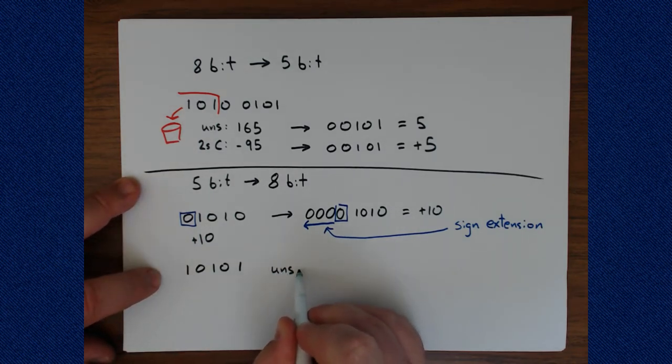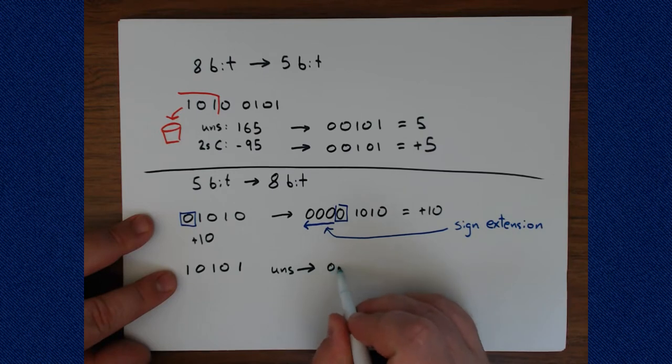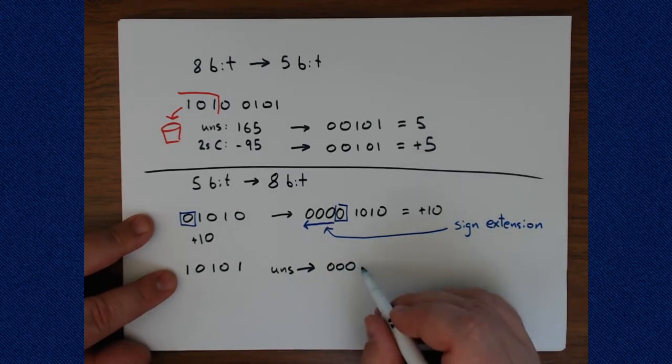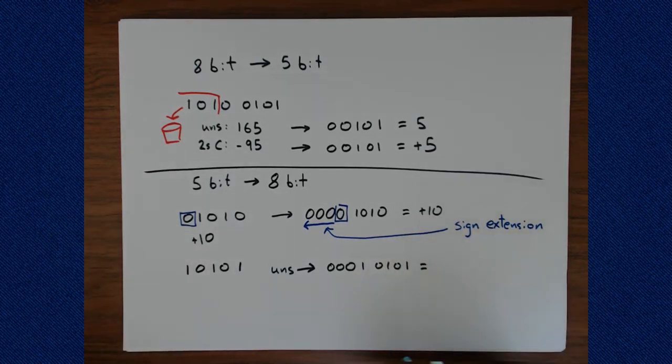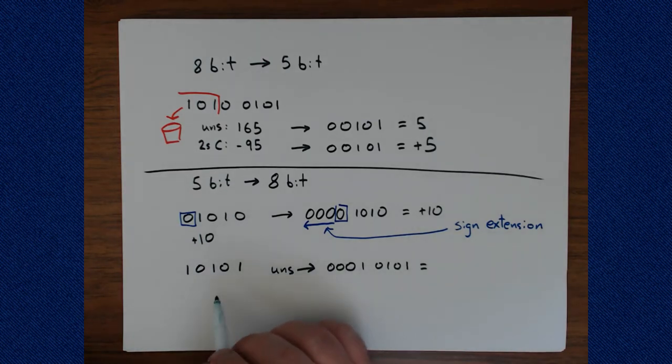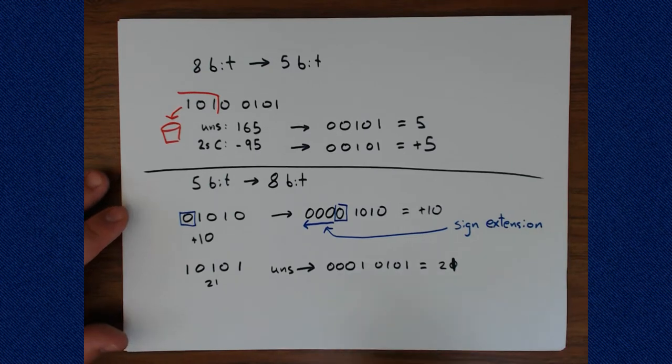For unsigned, when we do the conversion now from five bit to eight bit, we're just going to add three zeros because we're not changing the magnitude of this value. One, zero, one, zero, one. And so we end up with the same value that we used to have originally, whatever it is. Let's see what we got here. This is four plus one is five. And if this was unsigned, then this was the 16 bit. So this is 21 originally. And we end up with 21 here if we are doing this conversion from five to eight bits on an unsigned value.